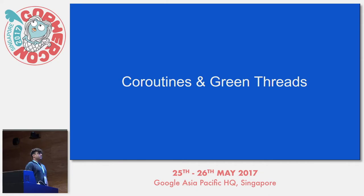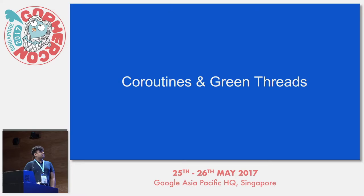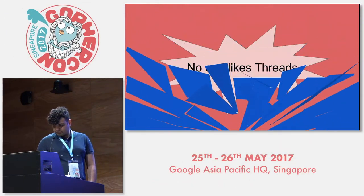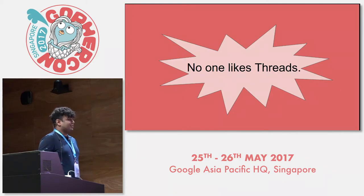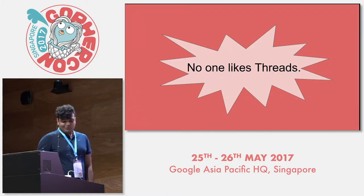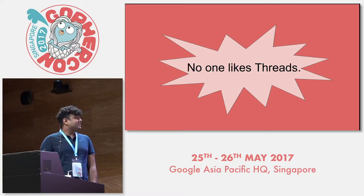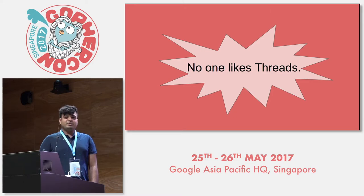GoRoutines are pretty much inspired by coroutines and green threads, so let's look at them. In case anyone's wondering why I'm not talking about real threads — they are painful to use. There's a lot of state manipulation and it's really easy to get them wrong. Truth be told, concurrency can take care of all your threading needs in 90% of the cases.